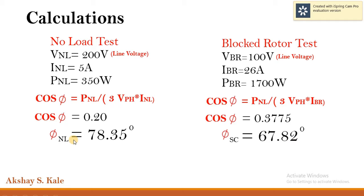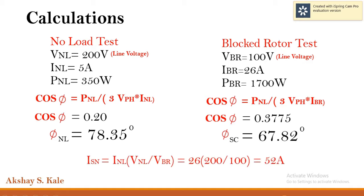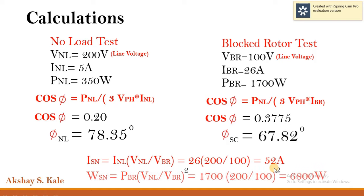Phi_NL is the angle between voltage and no-load current, whereas phi_SC is the angle between voltage and block rotor current. Now, coming to the most important part: current must be converted corresponding to the rated value V_NL, that is V1 of the motor. The formula is ISN = INL × (VNL / VBR), which comes out to be 52 amperes. Similarly, WSN = PBR × (VNL / VBR)², which comes out to be 6800 Watts.